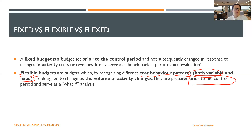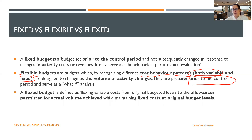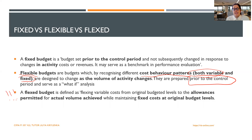A worst case scenario is where everything is not working. We can have many, many budgets, and we call them flexible budgets. There is another definition which is very similar — the flexed budget. A flexed budget is used in your actual-versus-budget analysis. It is defined as flexing variable cost from original budgeted levels to the allowances permitted for actual volume achieved, while maintaining fixed cost at original budgeted levels.